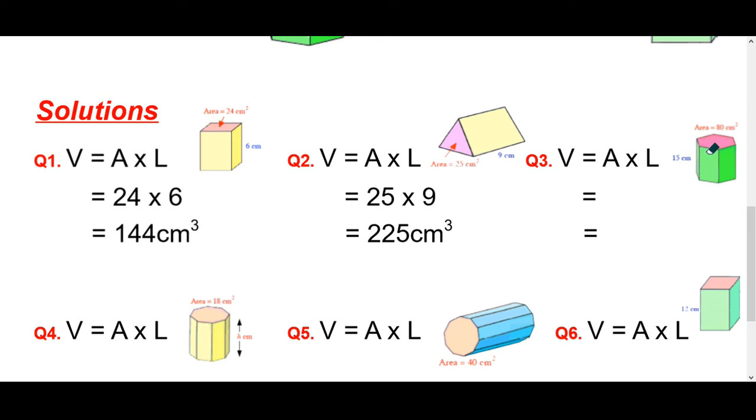This one, we've got a hexagonal prism. The area is 80. The length of the height is 15. So it's just 80 times 15. And your answer is 1200 cm cubed.